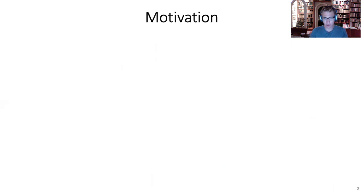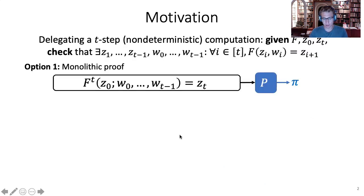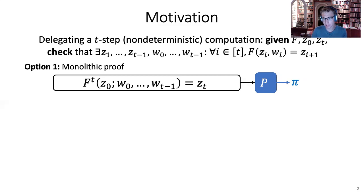Consider doing a long T-step computation. The computation evolves in a chain-link way: we go from step Zi to step Zi+1 non-deterministically by applying a transition function f to Zi and an optional witness Wi. Say we want to outsource this computation to an untrusted server, and we want the server to provide a proof that it did the computation correctly.